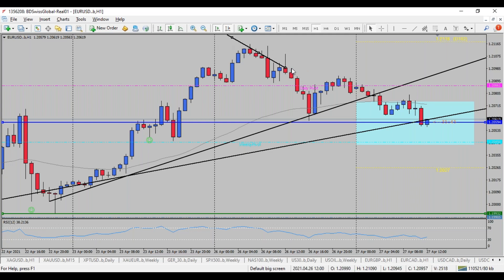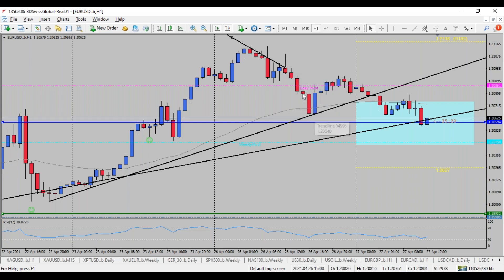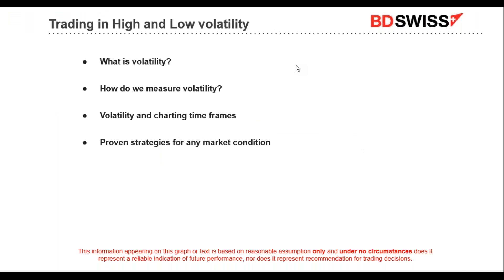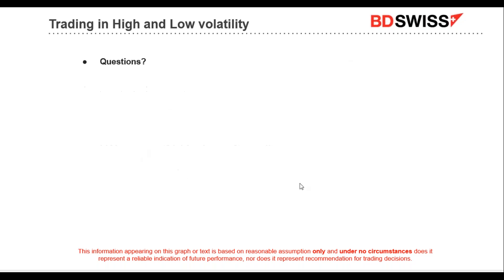If you have falling prices on the hourly chart — a pin bar to the upside — you want to sell thereafter and participate in the falling market price. The same story applies: higher volatility means you should trade rather on a longer-term chart; lower volatility means you change and trade rather the shorter time frames to participate correctly. Happy trading — I'll send the ATR indicator over to you. Thanks a lot for tuning in at BDSwiss. See you later, bye.